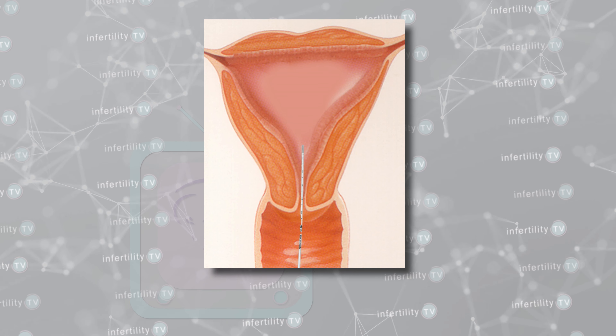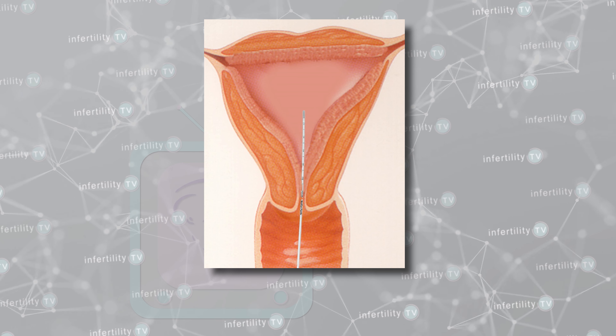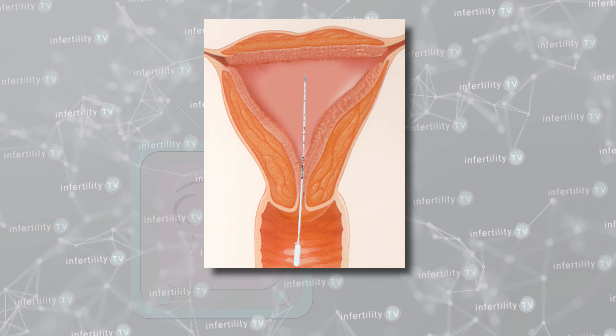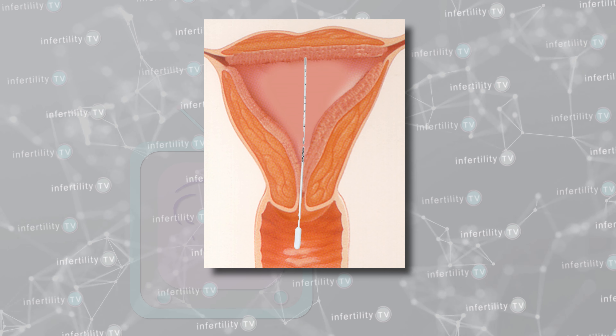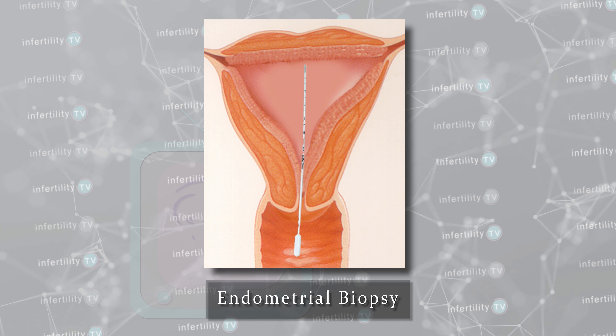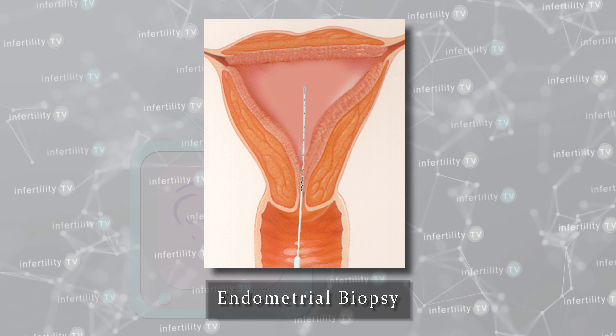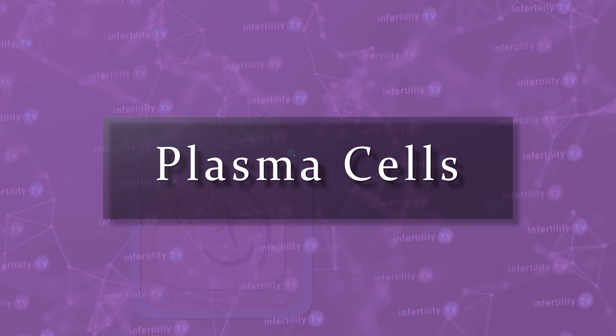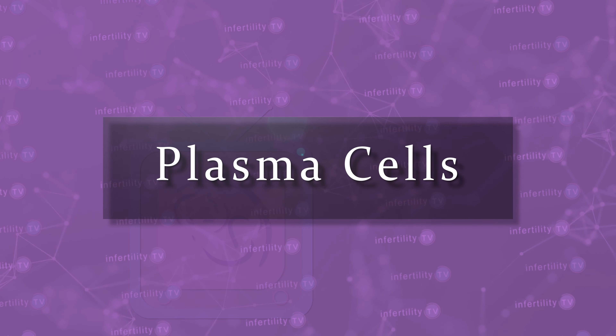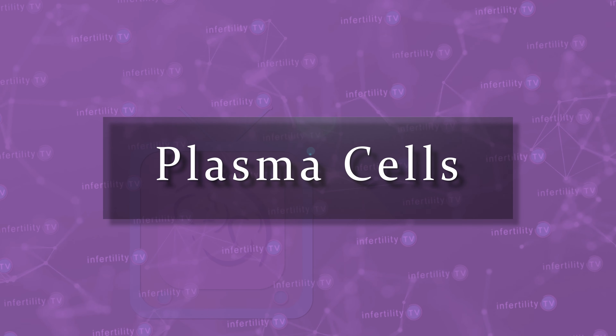The most accurate way to diagnose chronic endometritis, however, is by taking a sample of the uterine lining known as an endometrial biopsy and looking at it under the microscope. Even under the microscope, it can still be tricky to determine if a patient has endometritis. The hallmark for endometritis is finding a type of white blood cells known as plasma cells. Plasma cells can be tough to pick out under the microscope.